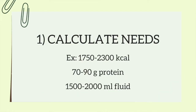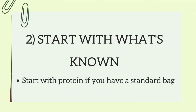The first thing you'll want to do when calculating a TPN is to calculate your patient's needs. Let's say they need 1,750 to 2,300 kcals and 70 to 90 grams of protein, and they need 1,500 to 2,000 milliliters of fluid. The hardest part is often getting started. If you have a custom bag, I recommend starting with your fluids as your known variable, but if you have a standard bag, I would start with calculating the protein and use the grams of protein as your known variable.